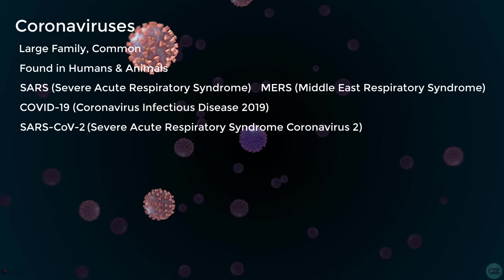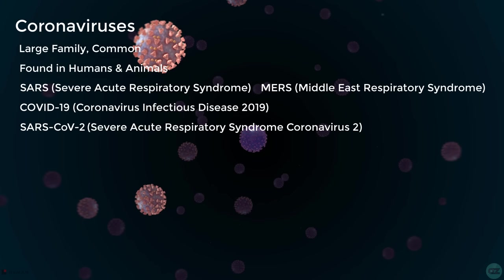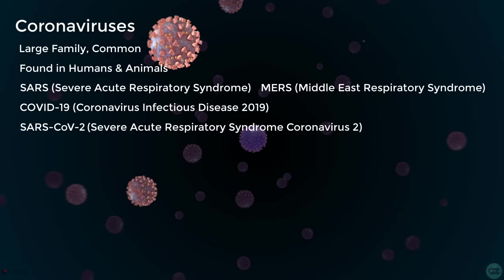This is the seventh known coronavirus to infect humans, two of which were similarly highly pathogenic, MERS and SARS. The other four are of low pathogenicity and endemic in humans.